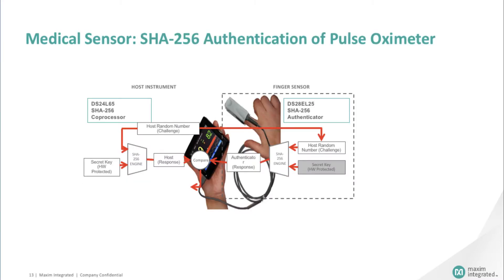As an example, let's look at how a pulse oximeter implements authentication. The pulse oximeter system has two parts: a host instrument and a finger sensor. The host system has two components: a microcontroller or FPGA and an authenticator coprocessor. The finger sensor is plugged into the host instrument, which initiates the authentication process. The micro or FPGA generates a random number and sends it to the authenticator within the finger sensor — this is the challenge. The authenticator then takes that random number, combines it with a secret key and other data, then uses the SHA-256 engine to produce a MAC message authentication code, or response — also known as a message digest.